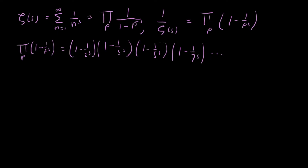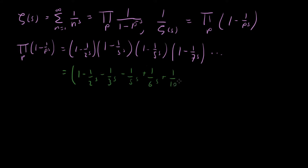Now I want to multiply out these first few terms and get a feel for what this thing actually looks like. When you do this out, you get: 1 - 1/2^s - 1/3^s - 1/5^s + 1/6^s + 1/10^s + 1/15^s - 1/30^s. Those are the first three terms, and then you have (1 - 1/7^s) and you can keep going.